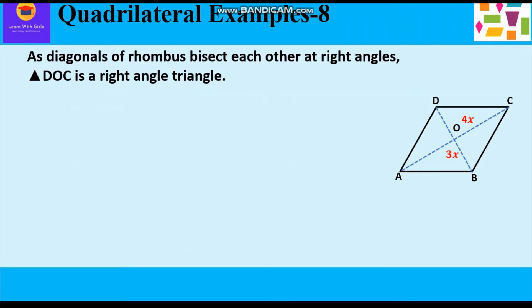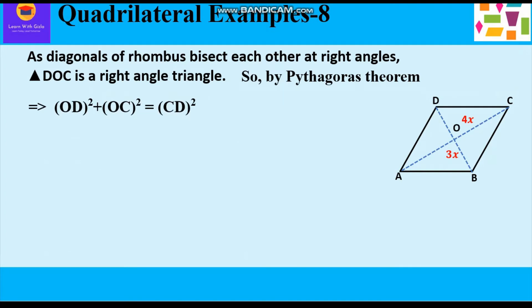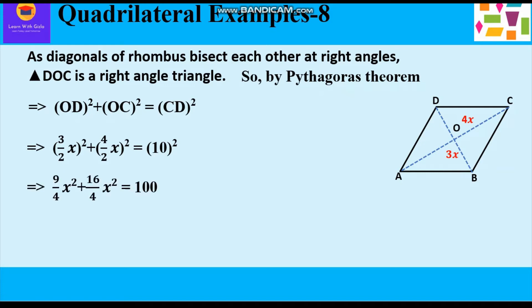Triangle DOC is a right-angled triangle, so we can apply the Pythagorean theorem. Since side CD is the hypotenuse: OD² + OC² = CD². That is, perpendicular² + base² = hypotenuse². Substituting values — OD = 3x/2, OC = 4x/2, CD = 10 cm — we write (3x/2)² + (4x/2)² = 10².